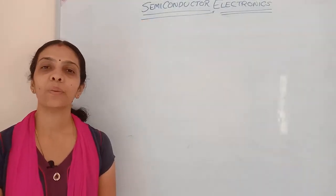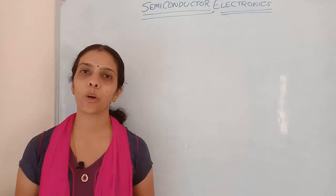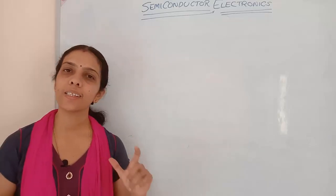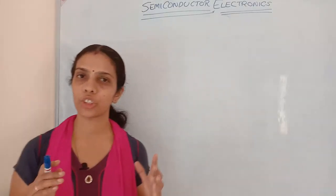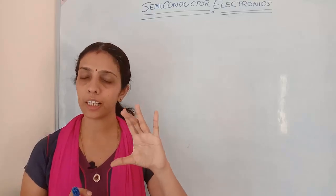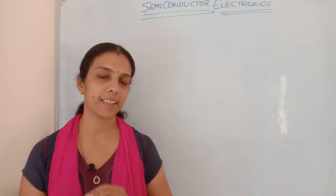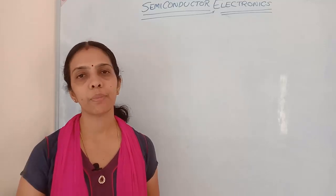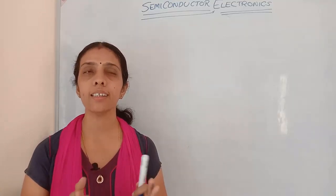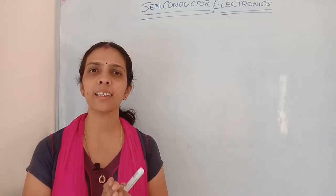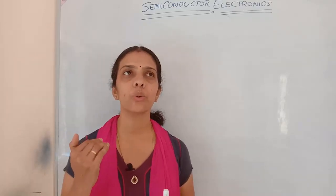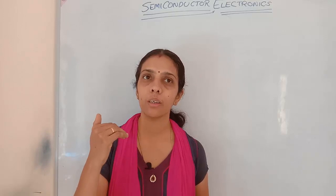Hello, welcome back to Learn Physics. In today's topic, we are continuing with our semiconductor electronics. In the last video, we learned about the PN junction diode under forward biasing. In forward biasing, the P-type is connected with the positive terminal and N-type with the negative terminal, causing the depletion region to decrease and the effective potential to be V minus V0.